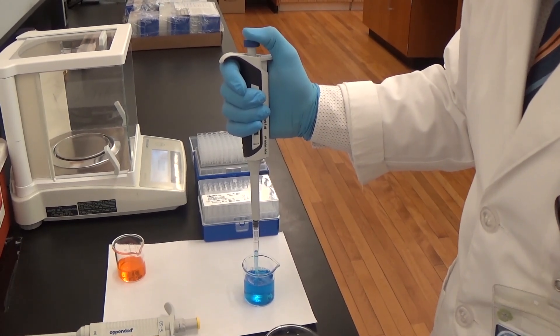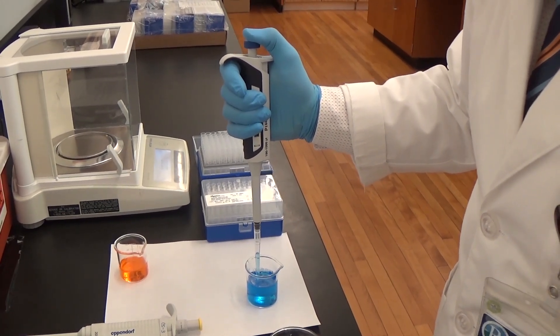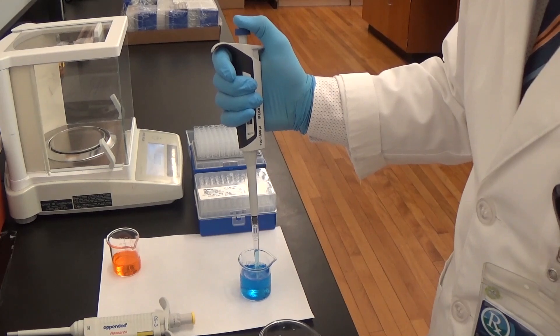Hold the pipetter vertically when drawing and withdraw the tip from the liquid by touching against the edge of the reservoir to remove the excess liquid.